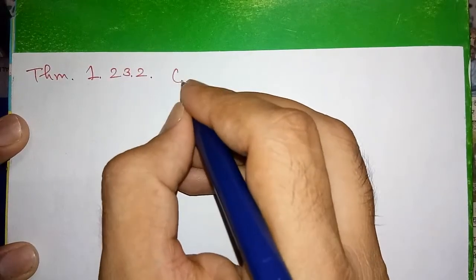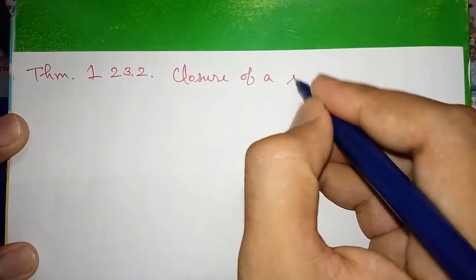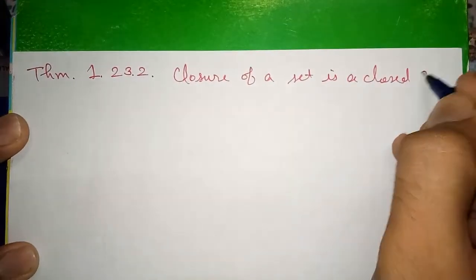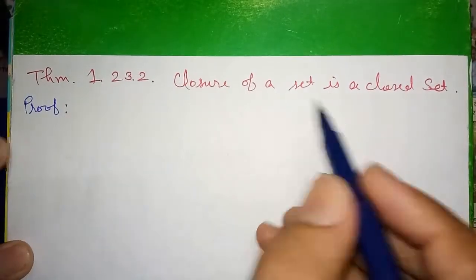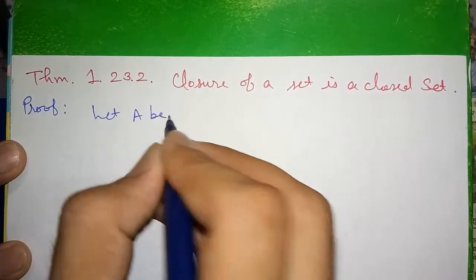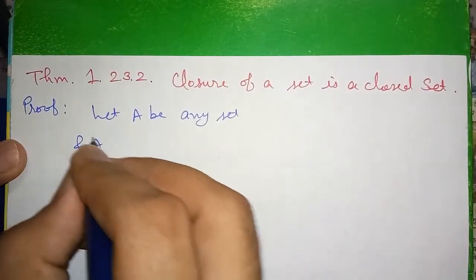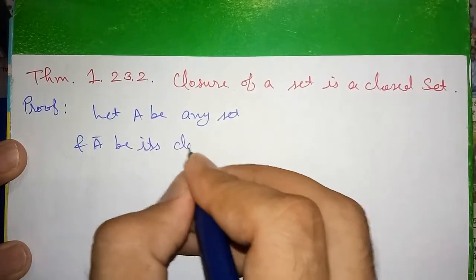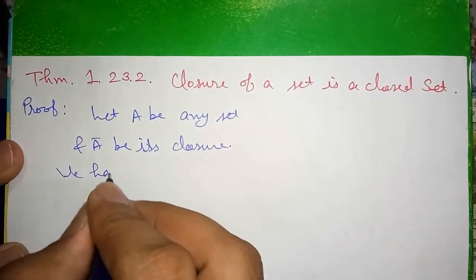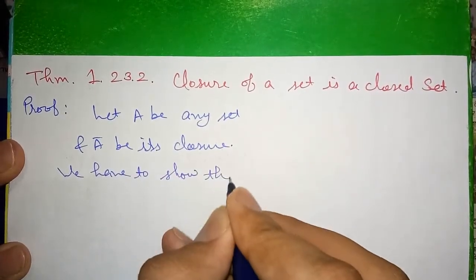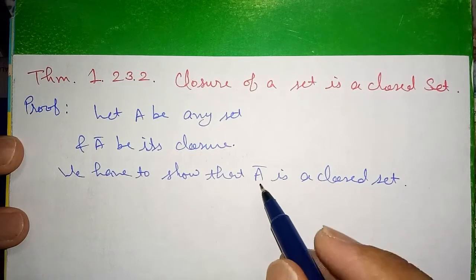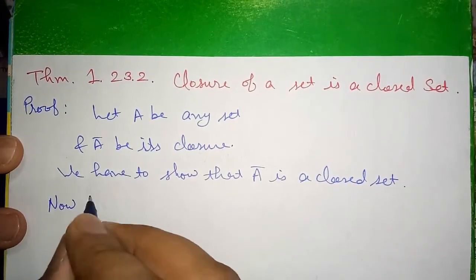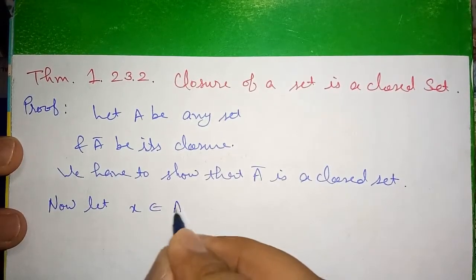Now we have Theorem 1.23.2: The closure of a set is a closed set. We will prove that A-bar is a closed set. To show A-bar is closed, we show its complement is an open set. Let X belong to the complement of A-bar.